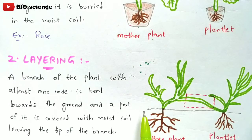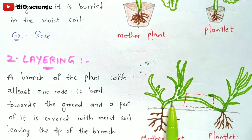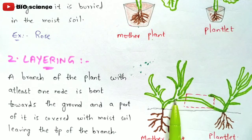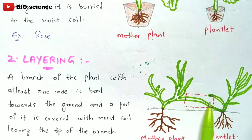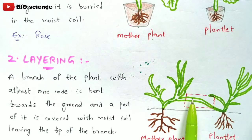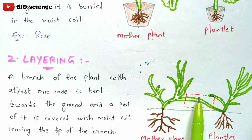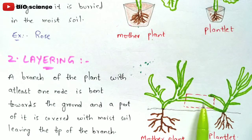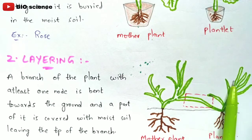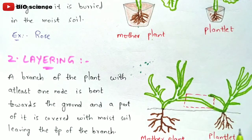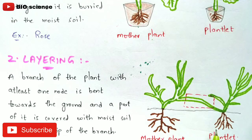In layering, human beings must be involved — the branch will not naturally develop toward the soil on its own. The branch must be kept toward the soil through human effort, so that a new plantlet containing both shoot system and root system will be developed from the mother plant.